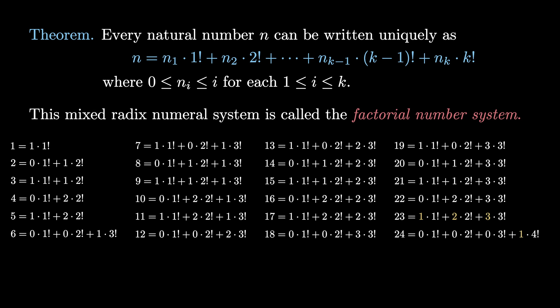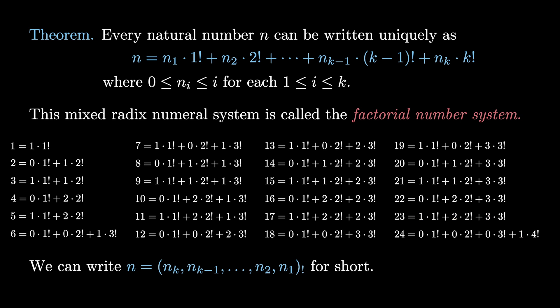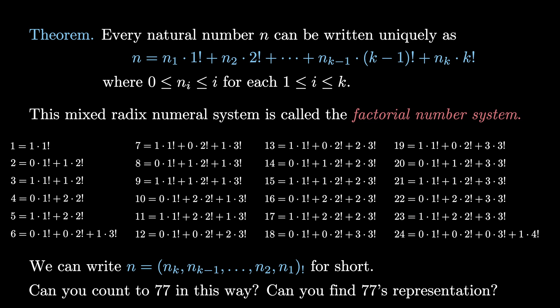Can you guess what the first 5-digit number will be in this number system? This is a positional number system, so we can simply list off the digits from most significant to least significant. We know what each digit represents because we simply multiply it by the factorial for the corresponding position. Can you keep going and count up to 77 this way? Even better, can you find the factorial number system representation for 77 without counting up to it? What's your strategy to find the digits?